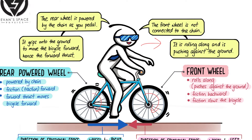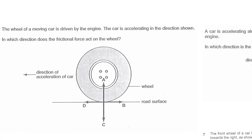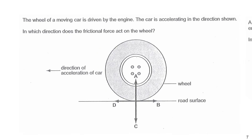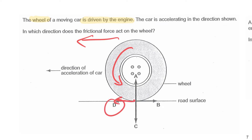Let's go through the example questions. It is very important to read the question carefully. In the first question, the wheel is driven by the engine — it's the wheel connected to the engine that creates the forward thrust. The car is accelerating to the left, so this wheel rotates anti-clockwise, and the friction — which is the thrust — is to the left. The answer is D.